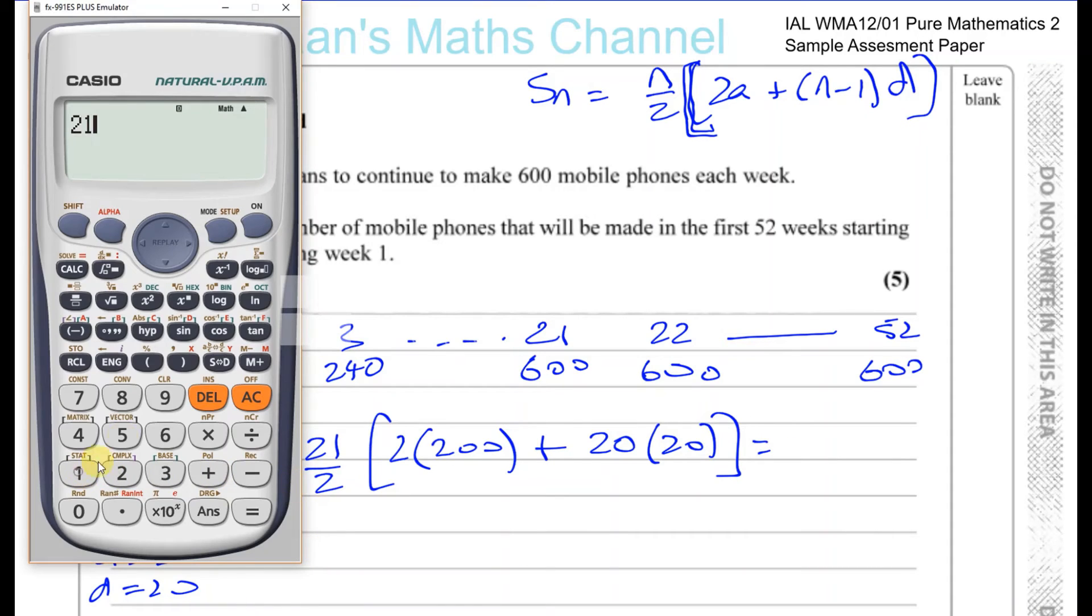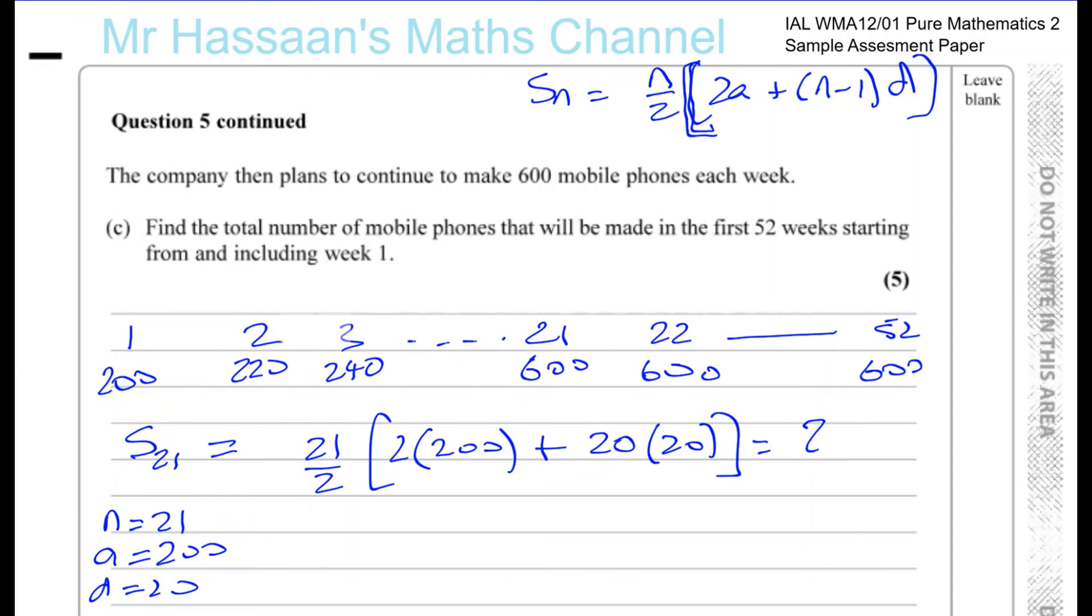So we're going to have 21 over 2 times (400 plus 400). So we end up with 8,400 in the first 21 weeks. There's 8,400 phones being sold in total in the first 21 weeks. And then you have from week 22 to 52.